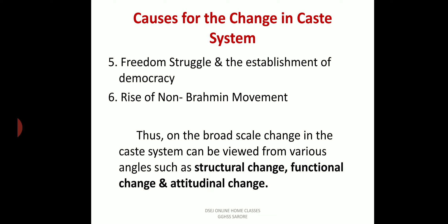Lower caste people started achieving progress in society, and a vast scope was created for them to advance. Now, change in the caste system can be seen in three broad categories. Structural change: with the coming of a uniform legal system and modern education, the structure of the caste system changed — the Constitution provided special privileges and quotas for Scheduled Castes and Scheduled Tribes, helping them rise in social hierarchy.